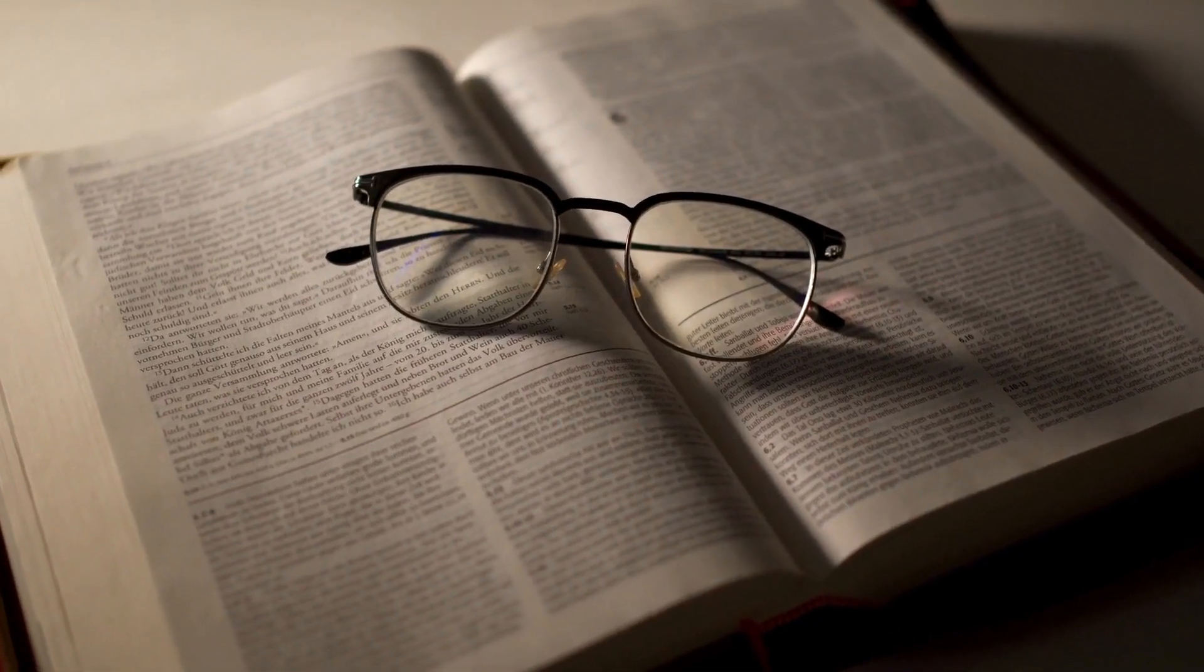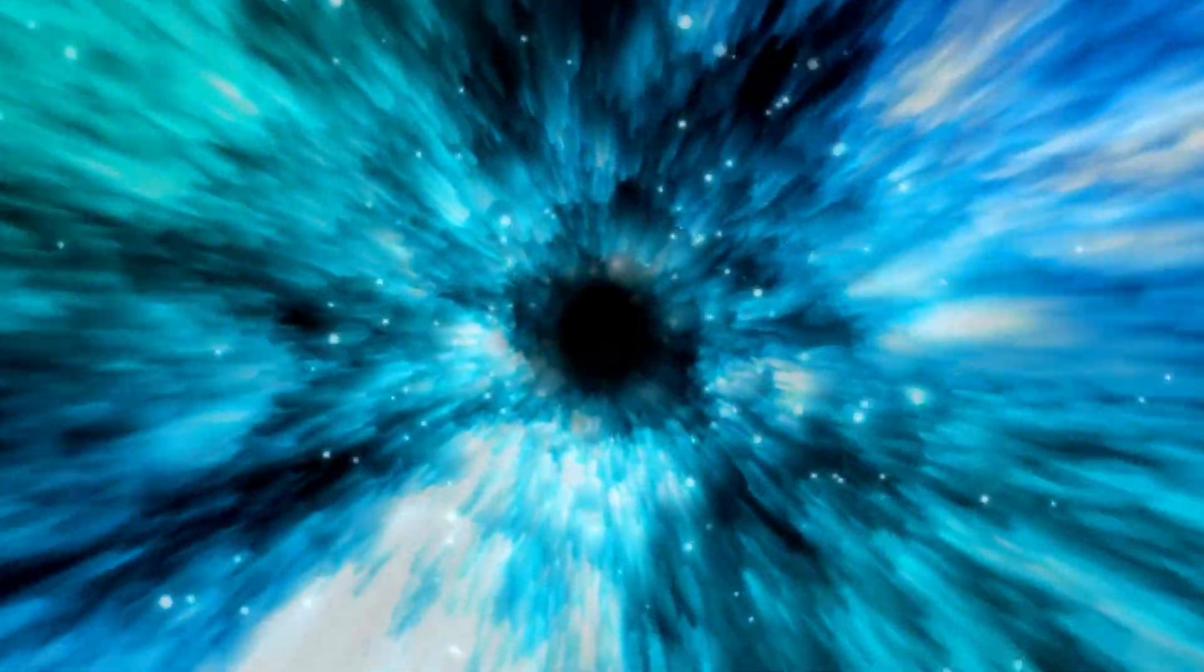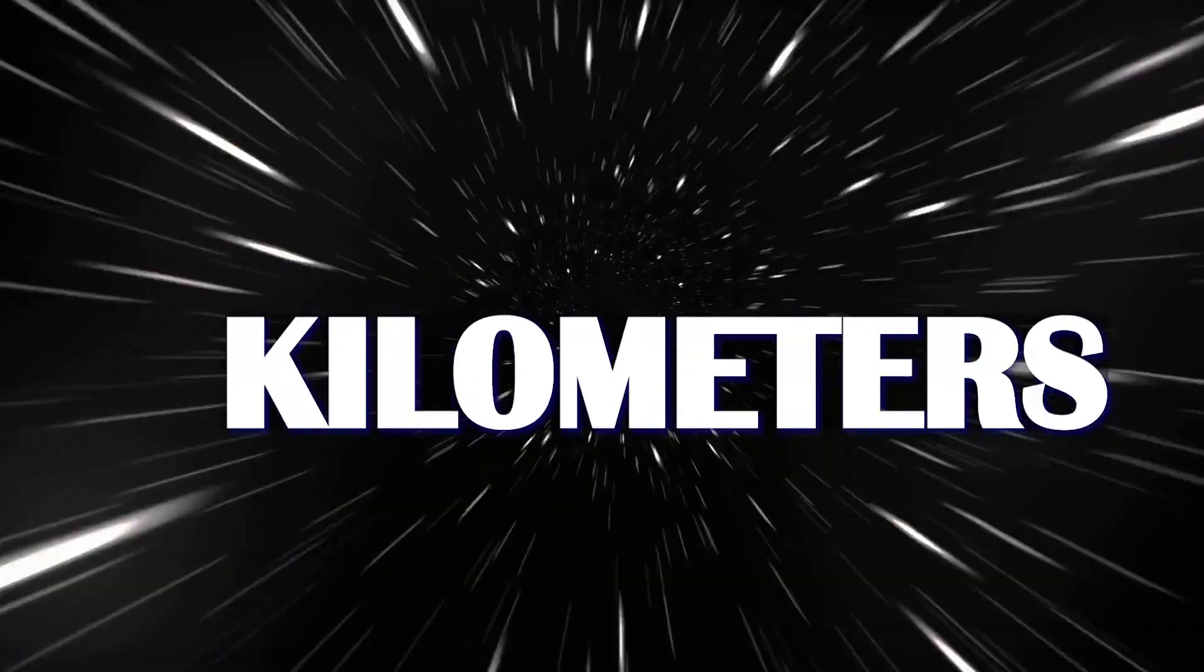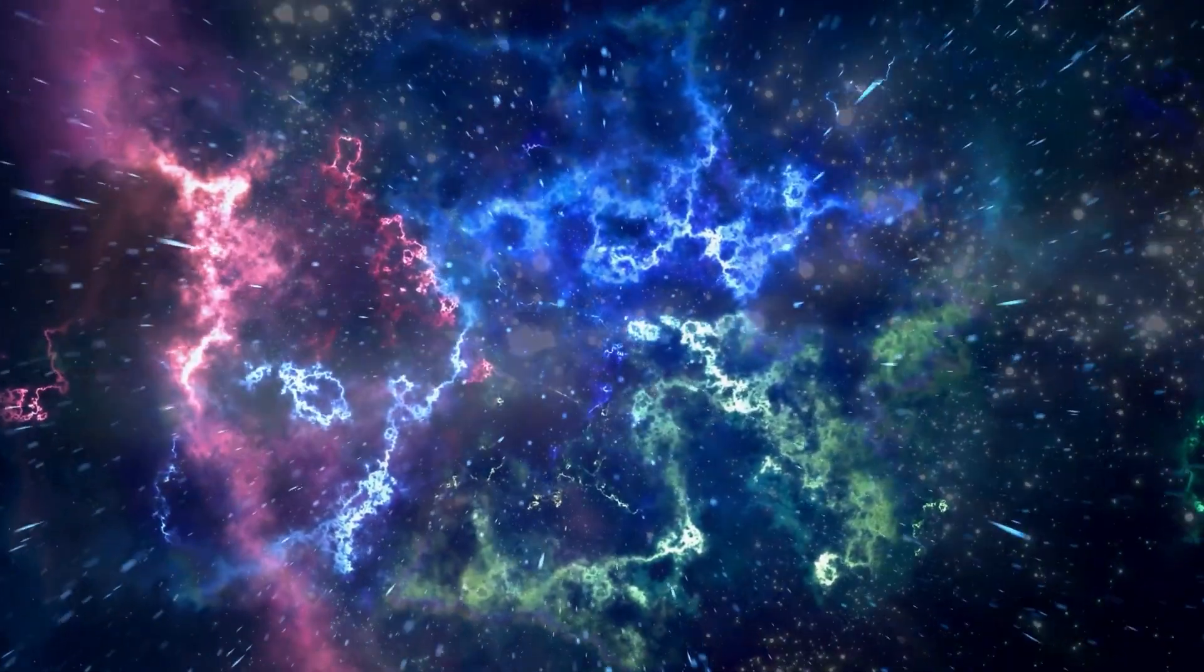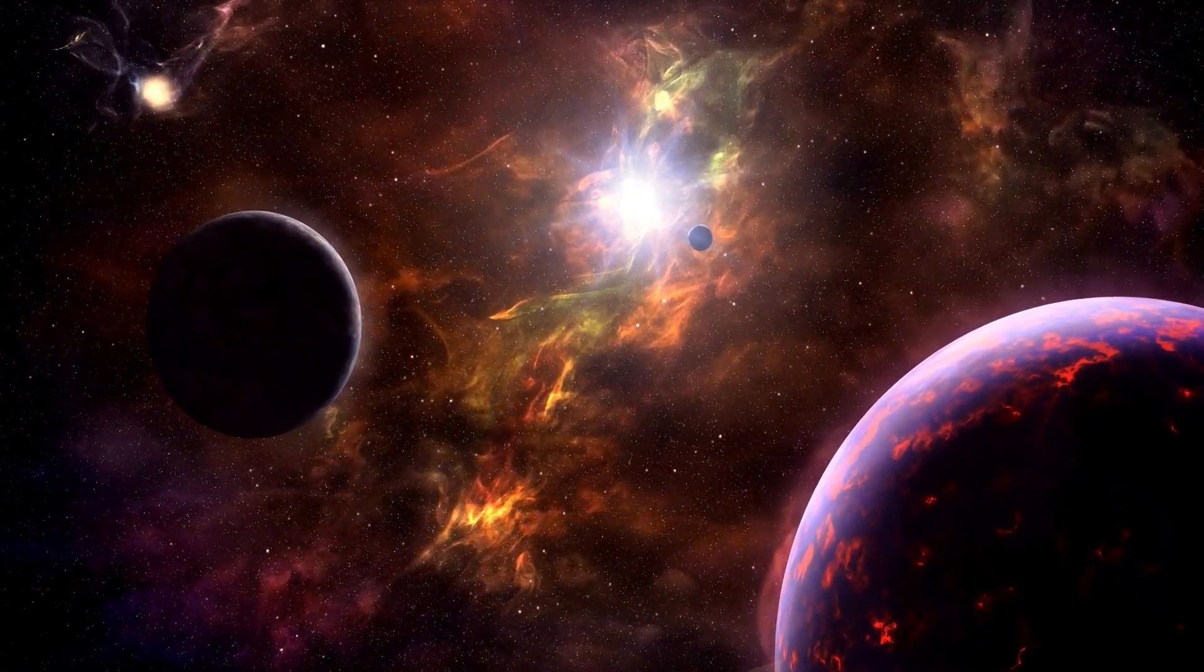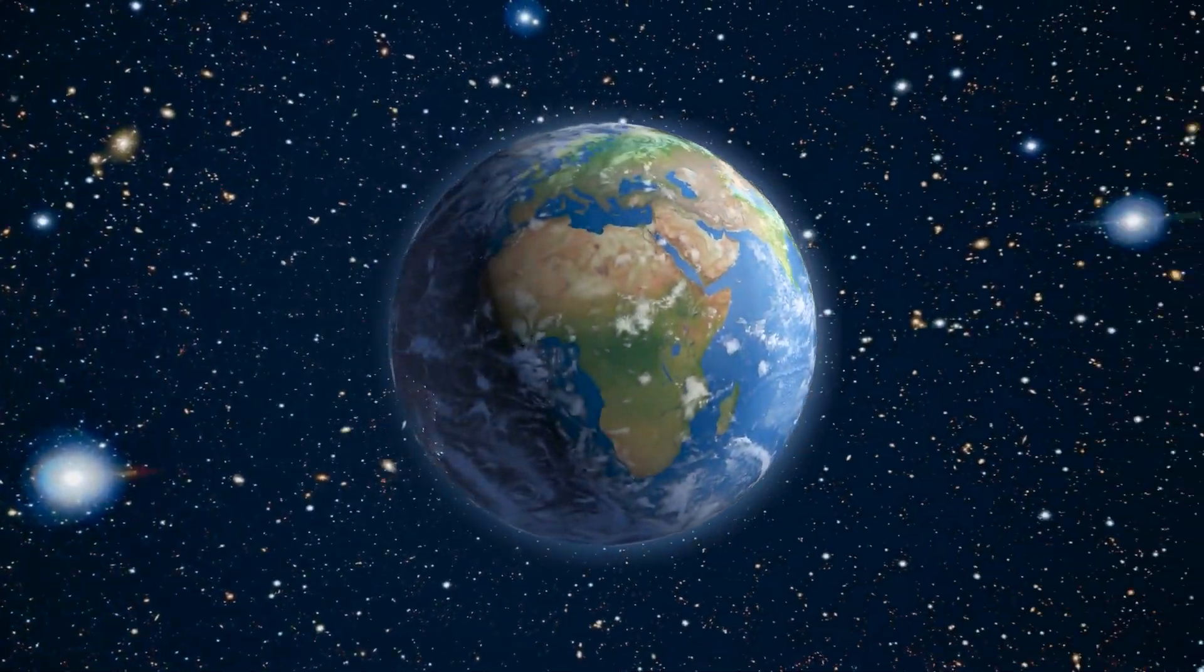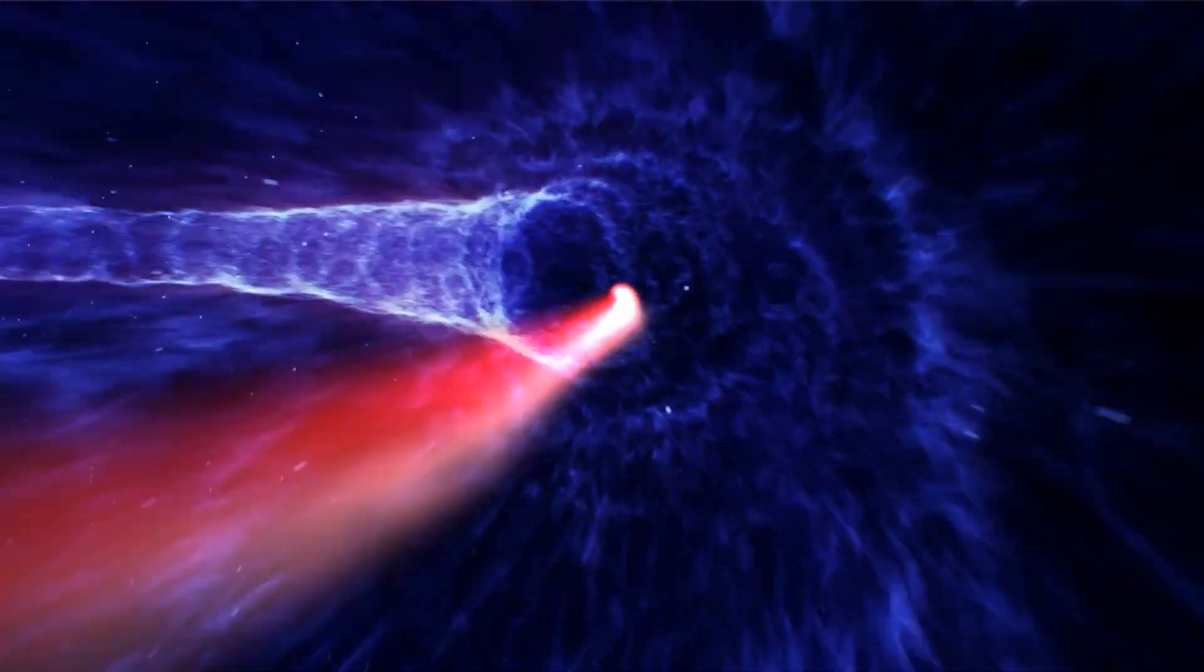One explanation that makes sense is that other civilizations may be too far away to reach us. Forget what you've seen in sci-fi movies. Instant communication across vast distances is impossible. Even the fastest waves, like light and radio waves, can only travel at the speed limit of light in space, around 300,000 kilometers per second. While that may seem fast, it still needs to be quicker. The distance between stars is measured in light years. A light year is the distance light travels in one Earth year, approximately 9 trillion kilometers or 6 trillion miles.